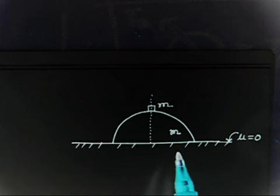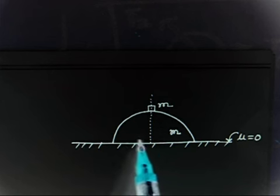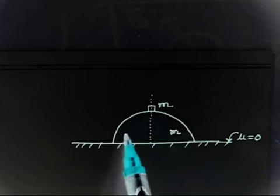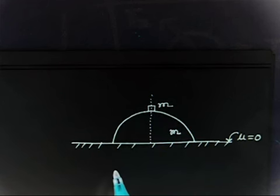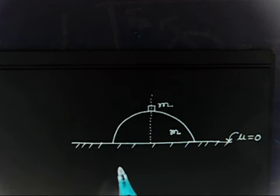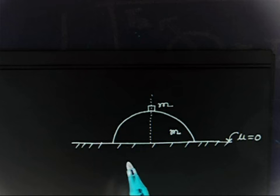The hemisphere also has mass m and is placed on a horizontal plane as shown in the figure. The system is released from rest. We have to find the angle theta with the vertical when the particle loses contact with the hemisphere.